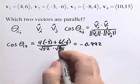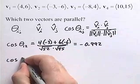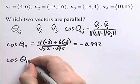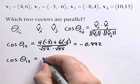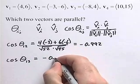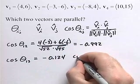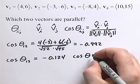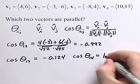If we proceed in the same way for the remaining pairs, we'll get cosine theta of vectors 1 and 3 is negative 0.124. The cosine of theta for vectors 1 and 4 turns out to be 1.